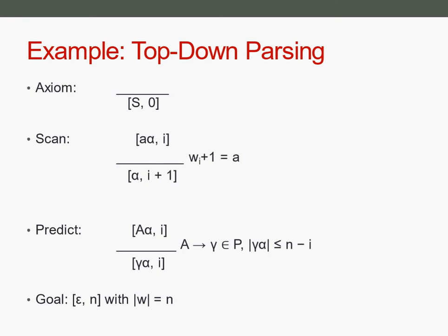Now I show you top-down parsing, formalized for parsing as deduction. Here we have our axiom, which initially fills the table. In top-down parsing we start with our start symbol on the stack, and we have an index or counter that tells us how much of the input string we have already seen. At the beginning we haven't seen anything, so we just start with zero.